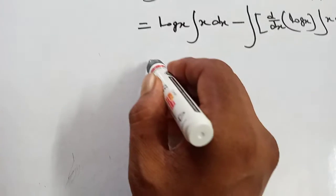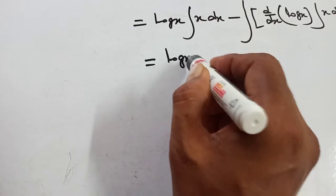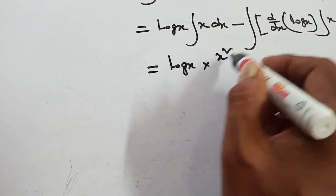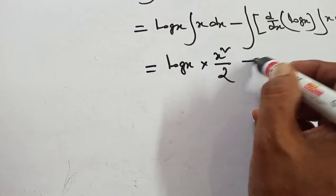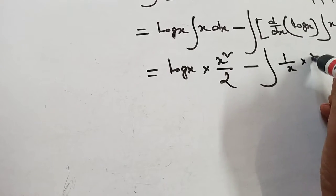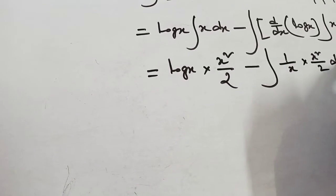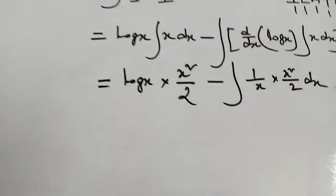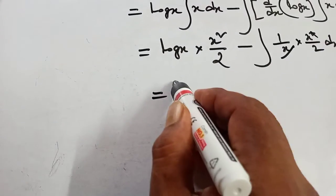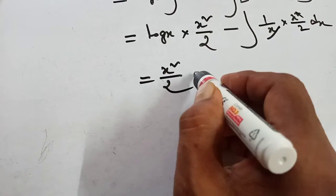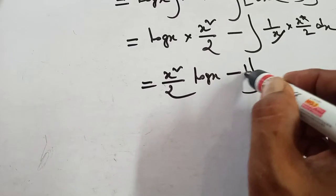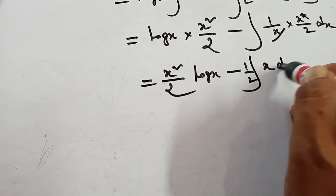Integration now. Log x into integration of x — that means it will be x squared by 2 — minus integration, dx of x, integration x squared by 2. That gives x squared by 2 into log x, minus integration 1 by 2x, integration 1 by 2.